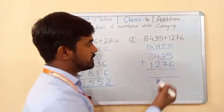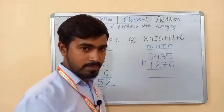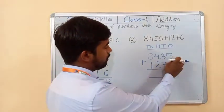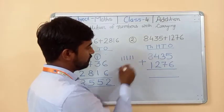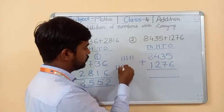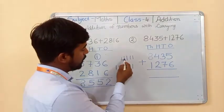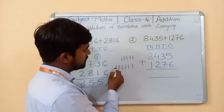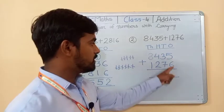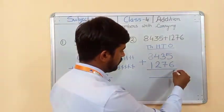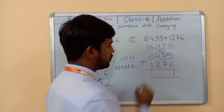Now in the second question, we have five and six on the ones place. So add five plus six. First draw five lines, then six lines. Add all these lines — that gives eleven. So five plus six equals eleven. Write one here; carry goes forward to the next column.